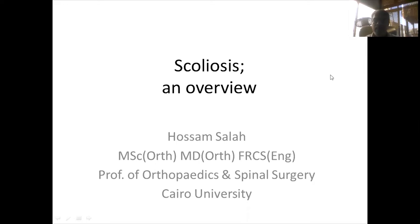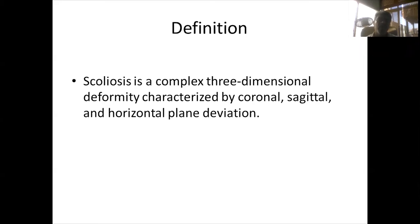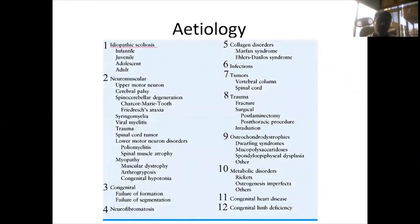Now I will talk about scoliosis — an overview. The word scoliosis comes from the Greek meaning bent or slanted, first described by Hippocrates and Galen. Scoliosis is best defined as a complex three-dimensional deformity characterized by coronal, sagittal, and horizontal plane deviation. There are many causes; the most common is idiopathic, but neuromuscular diseases — whether upper or lower motor neuron lesions — can also cause deformity because of muscular imbalance.